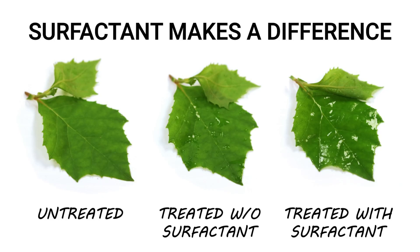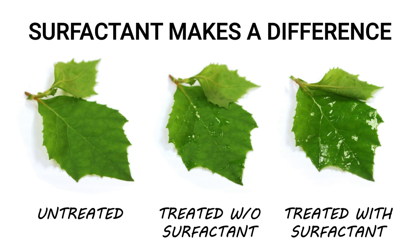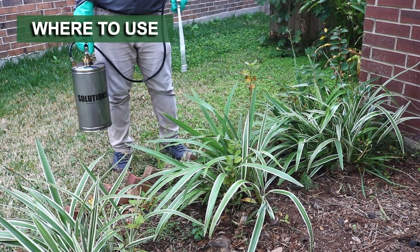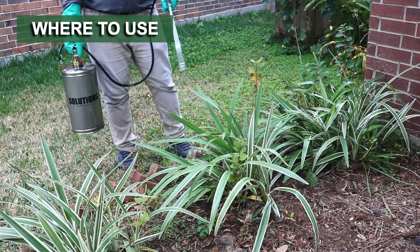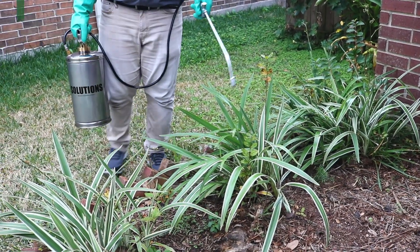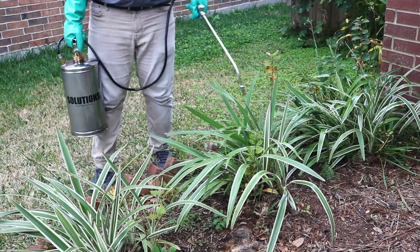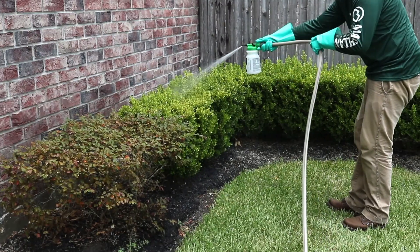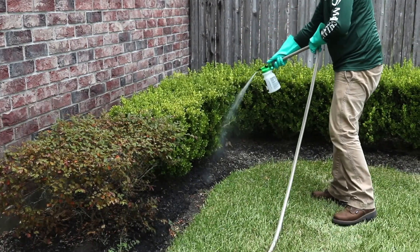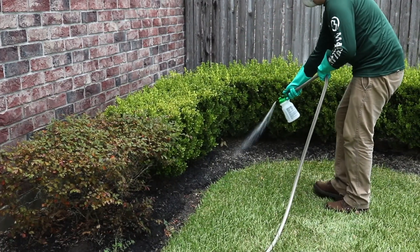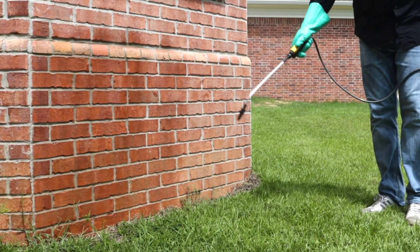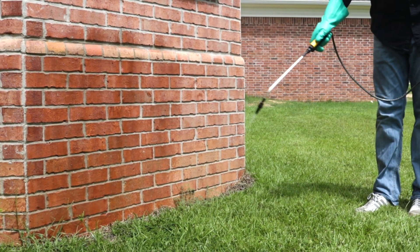When you spray, the Nanotech Surfactant will work to increase the surface area your application treats and ensures the solution sticks to treated areas. Use Nanotech Surfactant with pesticides or fertilizers intended for dry land applications. Depending on the pesticide or fertilizer, solutions can be applied to plants and turf to completely coat foliage, or they can be applied to man-made structures.